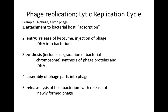We're going to go through phage replication. There are two different types of bacterial virus phage replication, and the first one we're going to describe is called the lytic replication cycle. Replication means the viruses, the phage, are going to make copies of themselves within the host bacterium — in this case E. coli. 'Lytic' tells us that as a result of the phage replicating inside the bacterium, the bacterium in the end is going to lyse, and that means it's going to die.